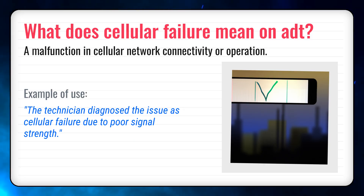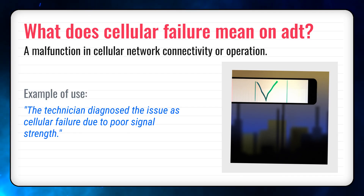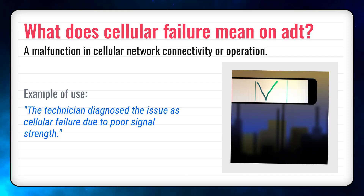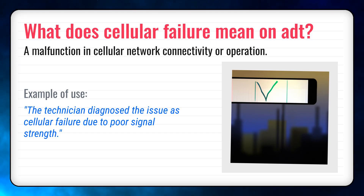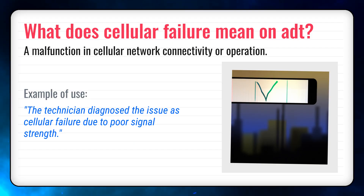So how do you use cellular failure in everyday language? Let's go through some examples. Correct example one: the technician diagnosed the issue as cellular failure due to poor signal strength. Correct example two: our call dropped because of sudden cellular failure in the area. And just for fun, here's a playful wrong example: I tried to cellular failure my homework, but it didn't go well. See how context makes a big difference? Using cellular failure correctly helps your meaning come across clearly, while using it wrong can sound confusing or just funny.